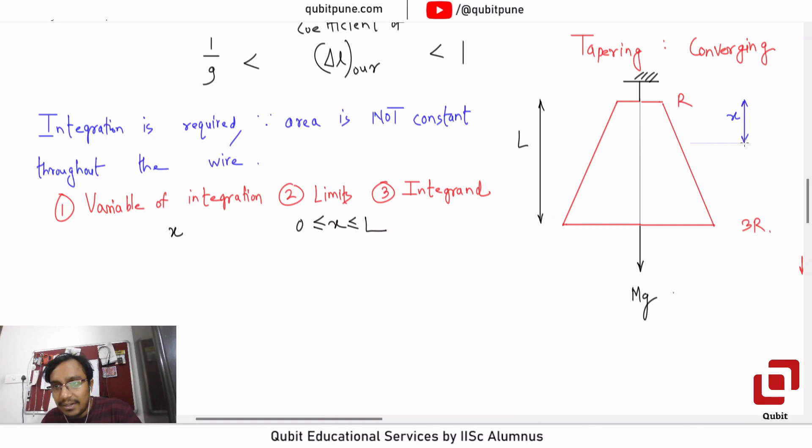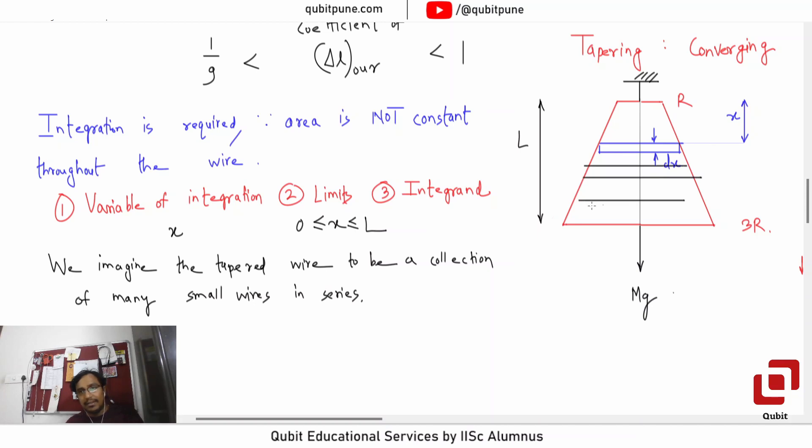I will consider a disk whose radius we can find. This is typical integration process. So suppose I say this has thickness dx. And one more thing which we have already seen: we imagine the tapered wire to be a collection of many small wires in series.